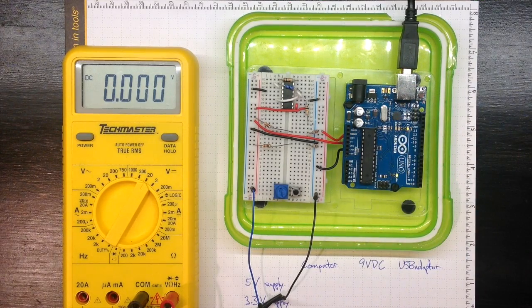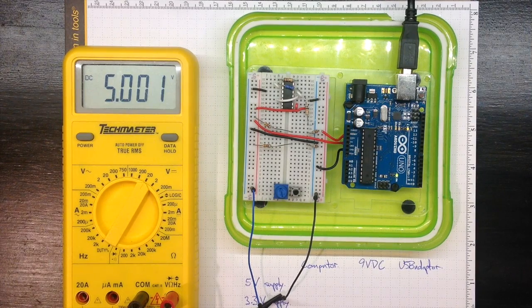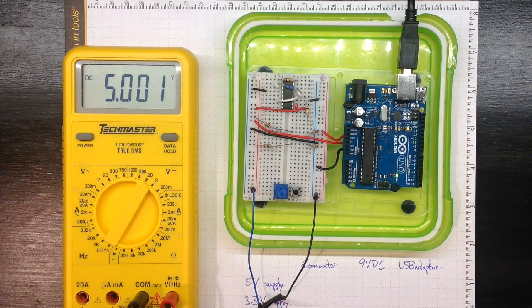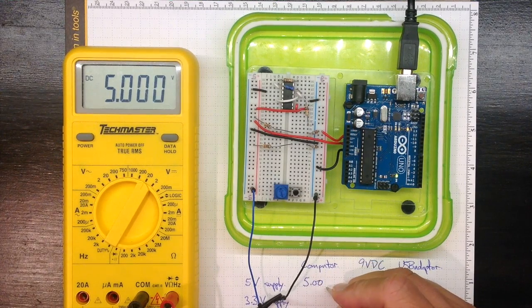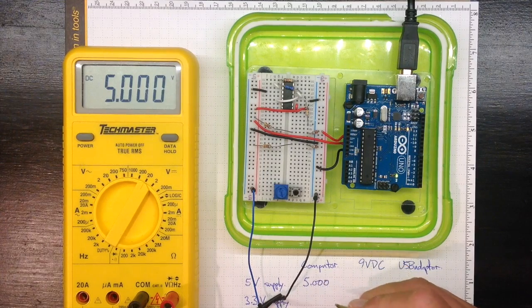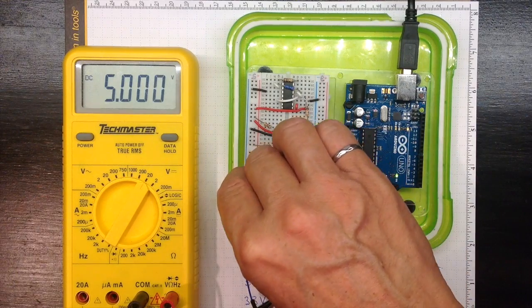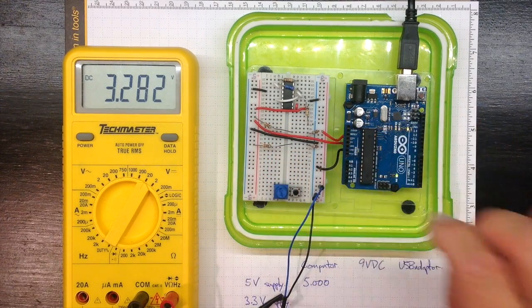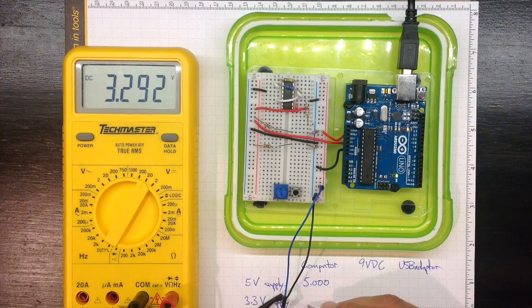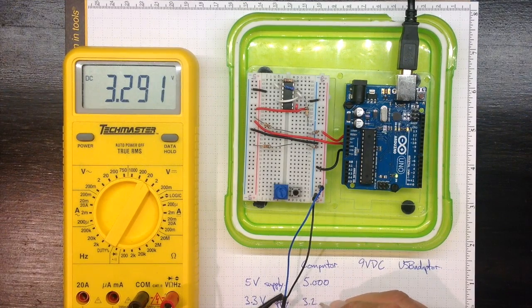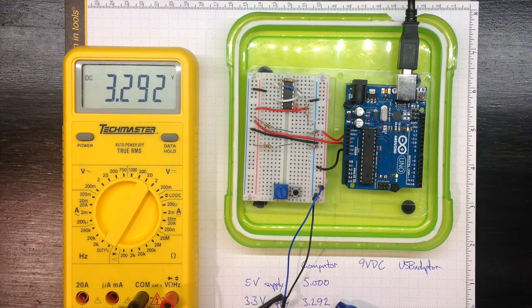Now if I plug it into my computer, I see a DC voltage that looks like almost spot on 5 volts. 5.000 volts and it's oscillating in the last digit there. Now let's check the 3 volt supply. I get 3.292. So very close to 5 volts and 3.3 volts as advertised.